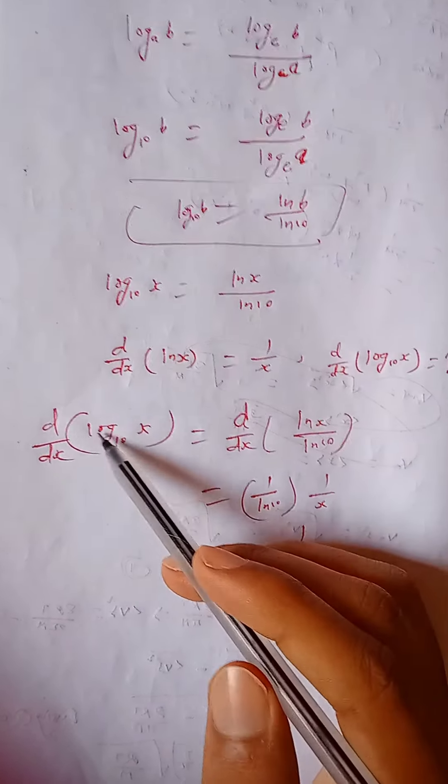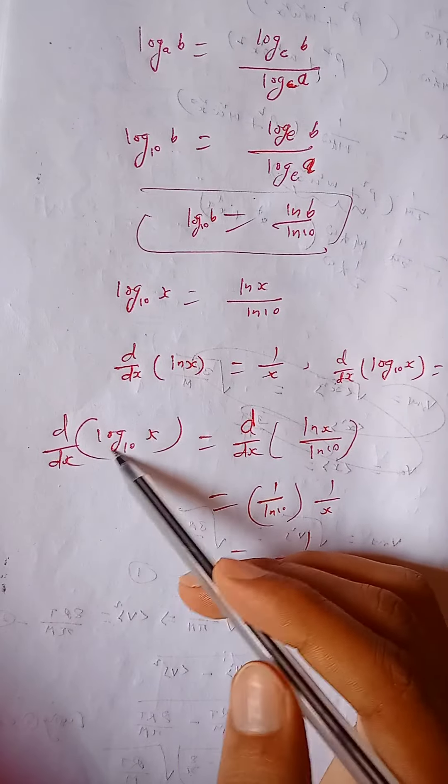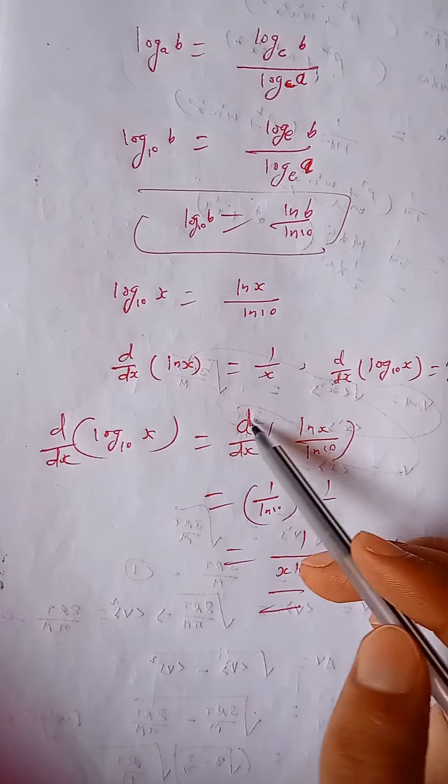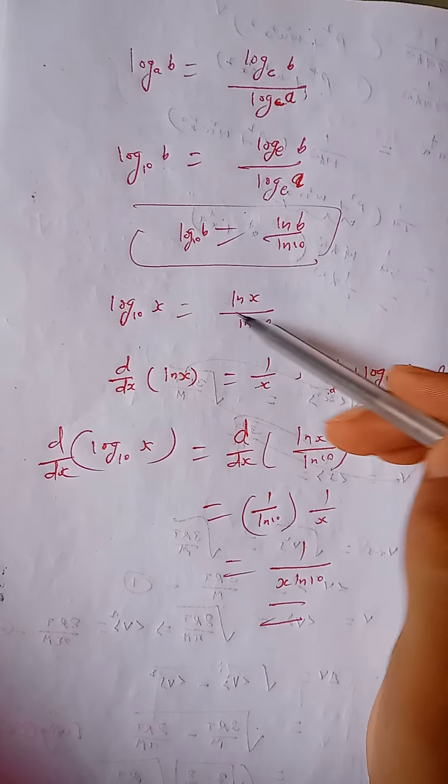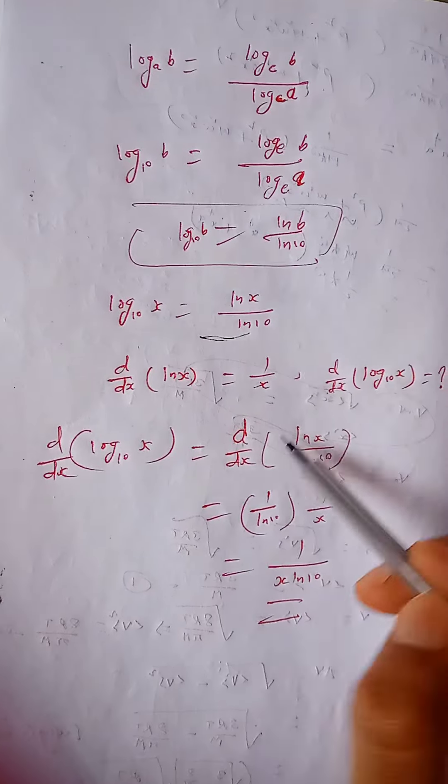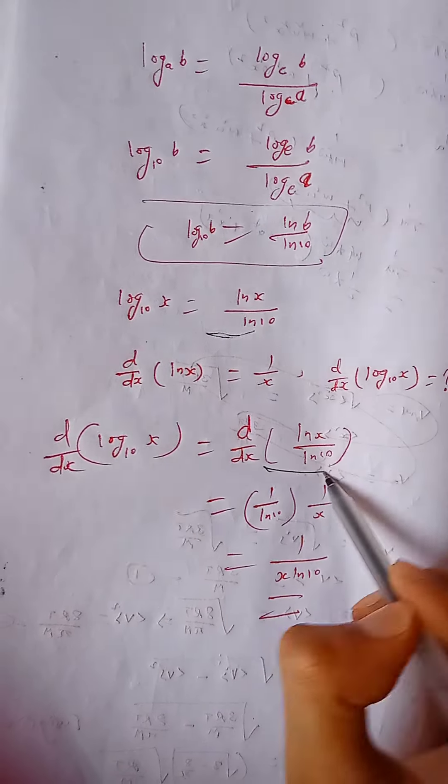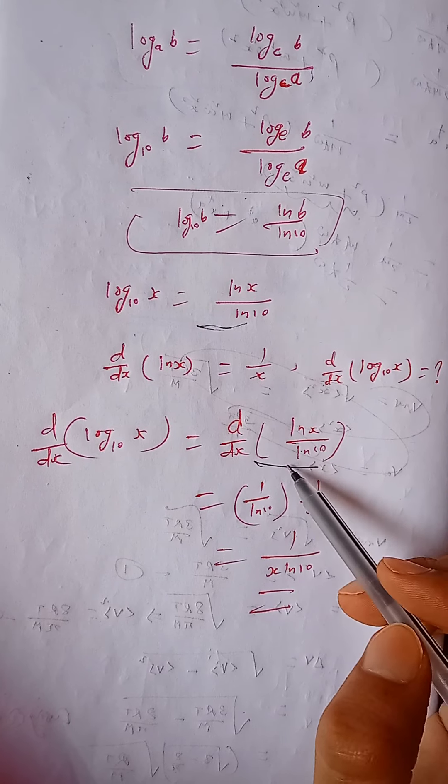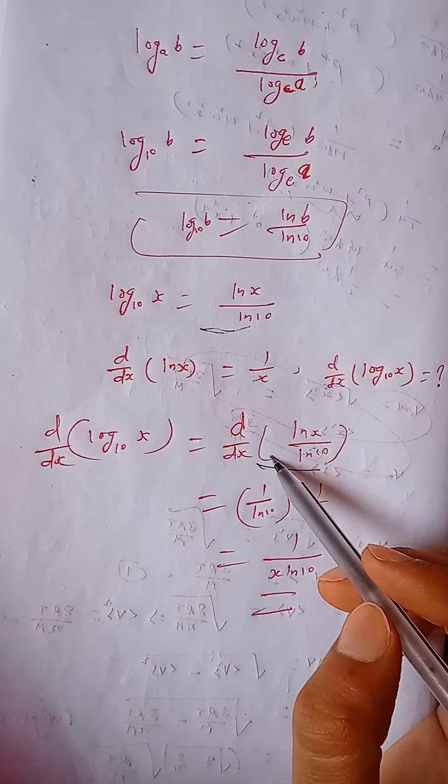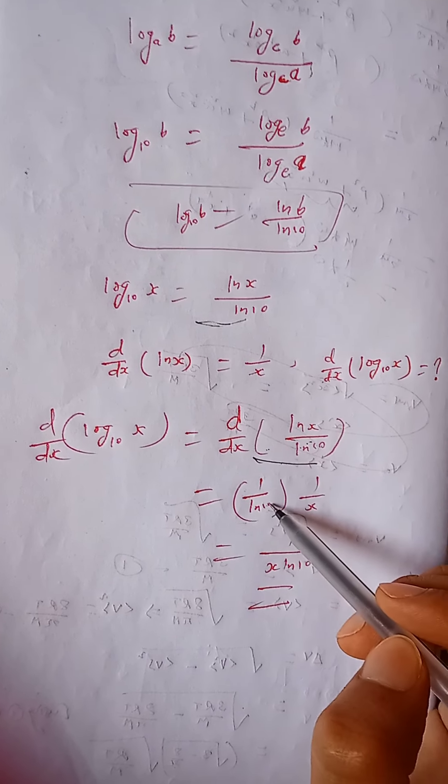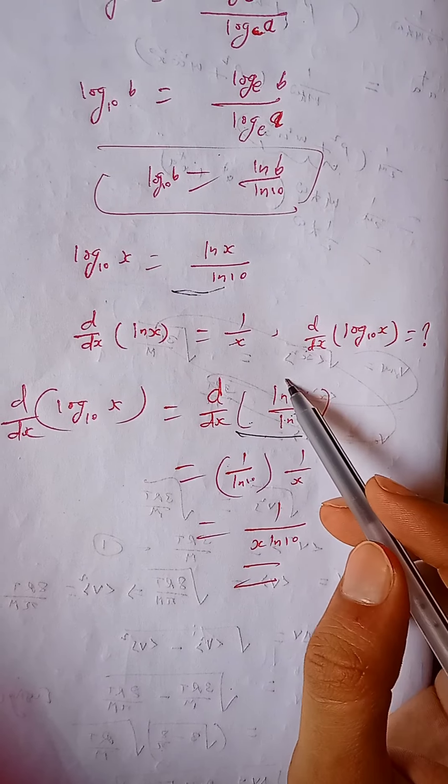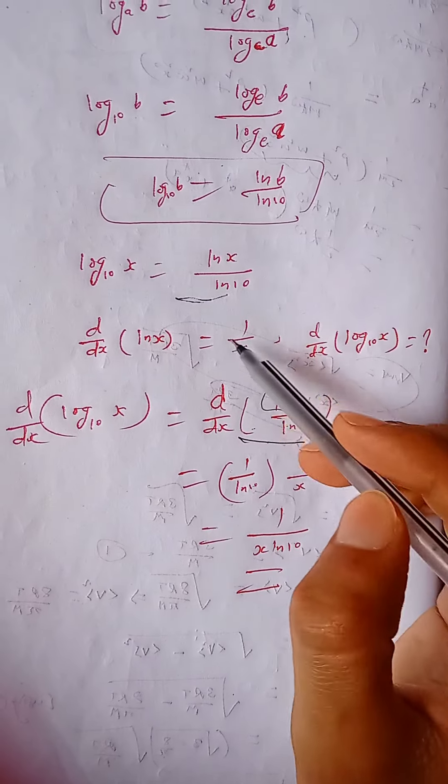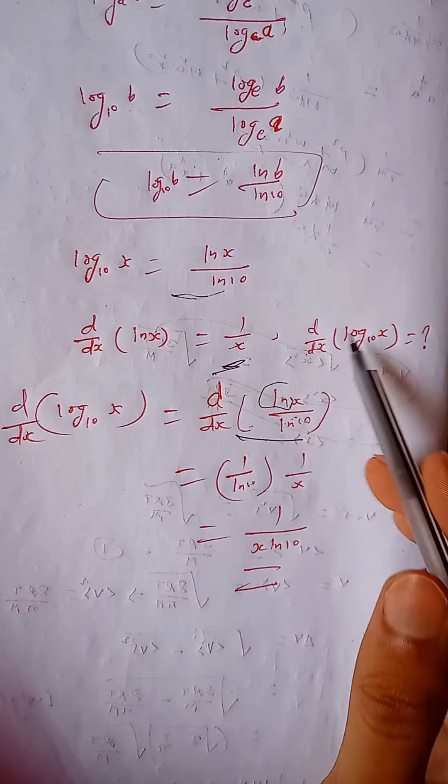Okay, so d by dx, we can do this here using this relation here. And so here we get this. So ln 10 is constant, so we take it out of this bracket: 1 upon ln 10. And the derivative of this, as you can see here, is 1 by x, and you know already.